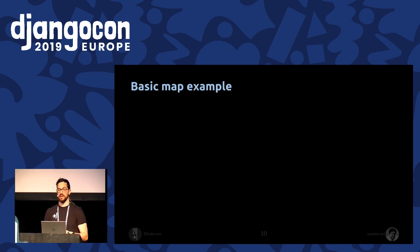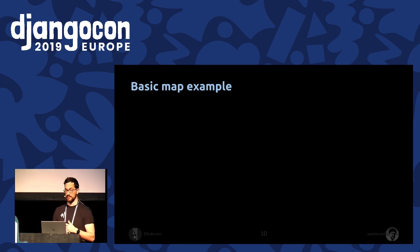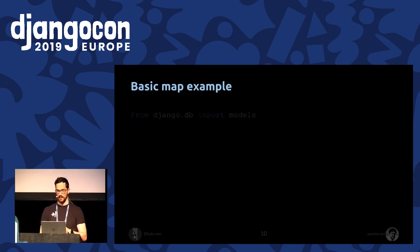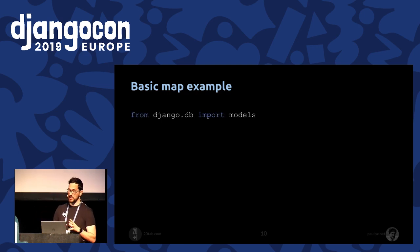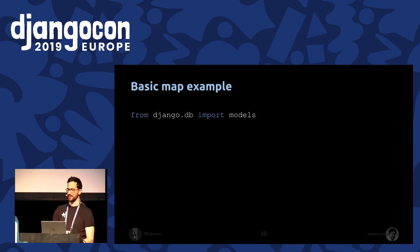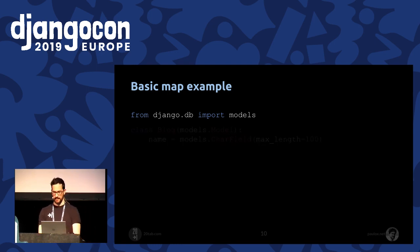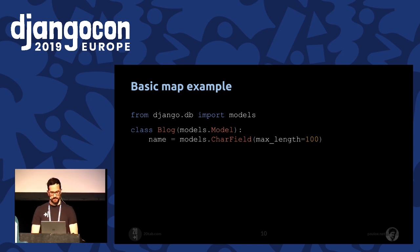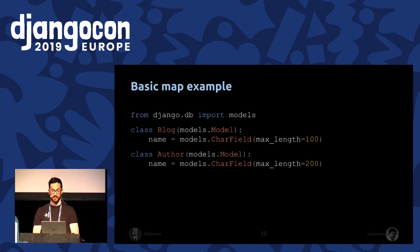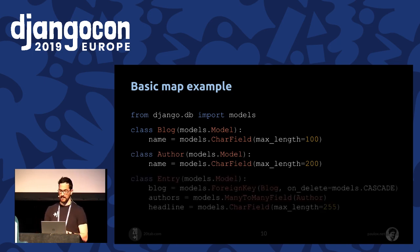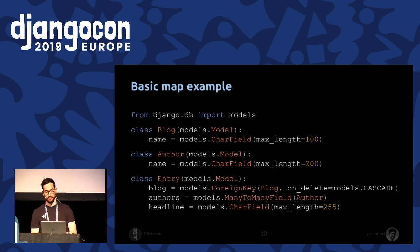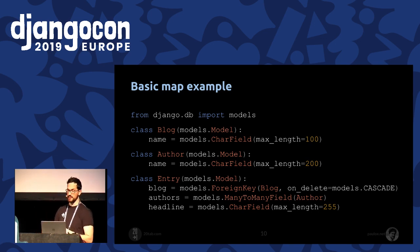Now we're going to see an example of a map integrated in a Django project. We'll use a basic Django project that everyone may know — I took it from the official documentation. We're looking at an extract from a blog application in the Making Queries section of the documentation. We have a Blog model, an Author model, and an Entry model. The Entry model has a headline, it's connected to a Blog, and it's related to one or more authors.